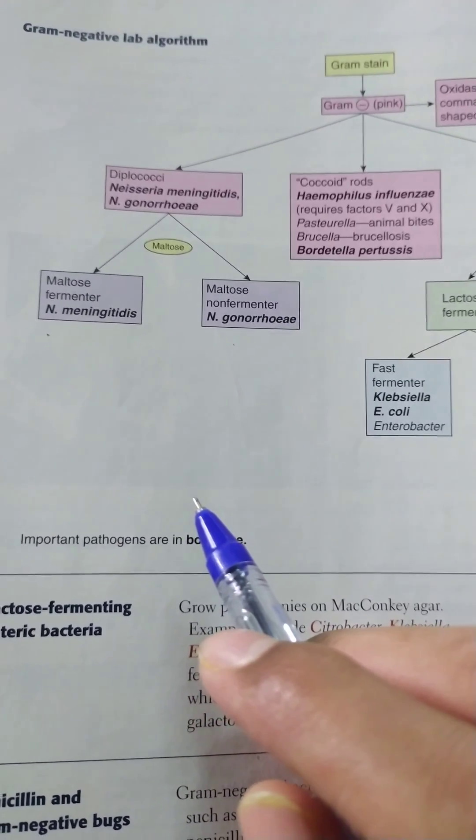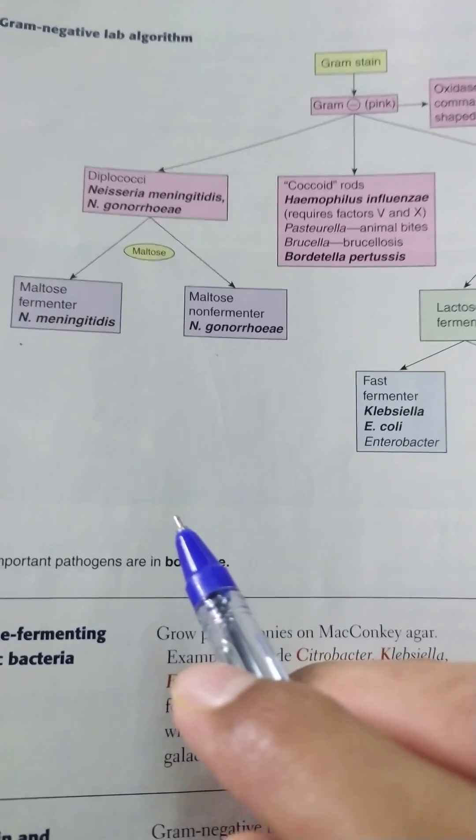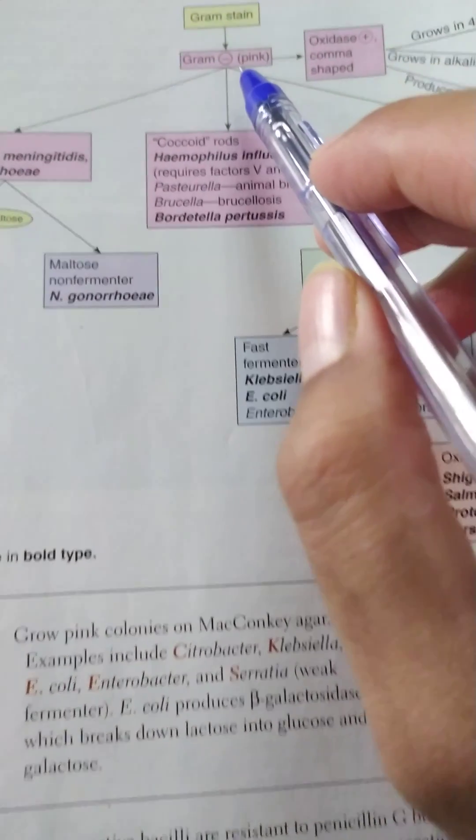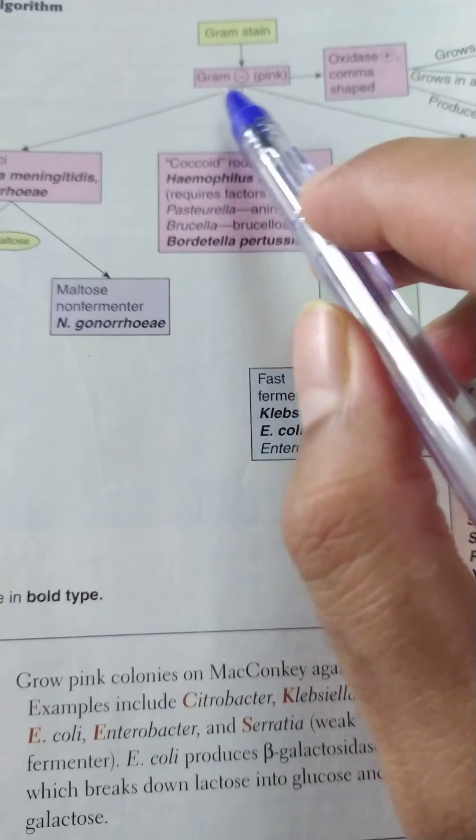Good morning friends. Today we will learn about the gram-negative lab algorithm. When we do gram stain, we get pink color which indicates it is a gram-negative organism.